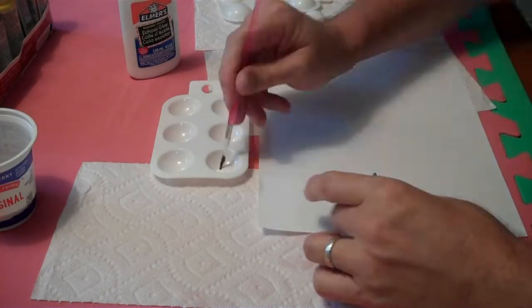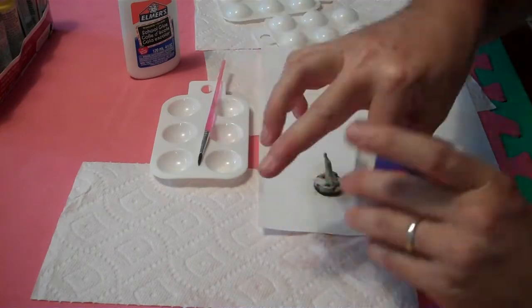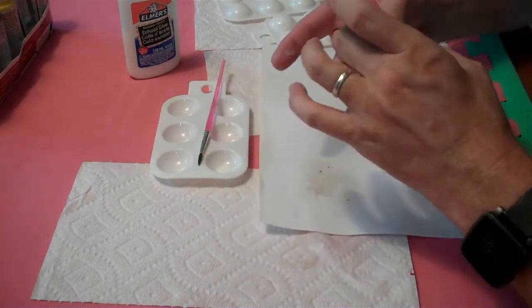Once the crocodiles were finished, I decided to flock the bases with some random stuff I had around the house. Here, I'm painting the base of the gray-yellow crocodile with white glue, and then dumping paver sand over the base to cover it.